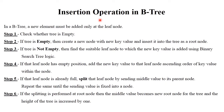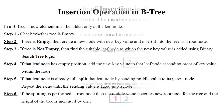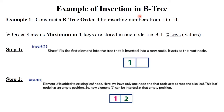The next operation is insertion — how we insert data in a B-tree. I will explain through an example. The given example is: construct a B-tree of order 3 by inserting numbers from 1 to 10. It means we generate a tree from 1 to 10 and the order is 3. When order is 3, we can store a maximum of m-1 = 2 keys in one node.